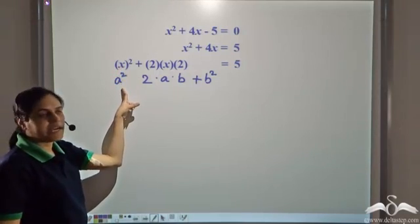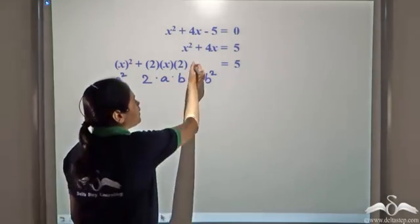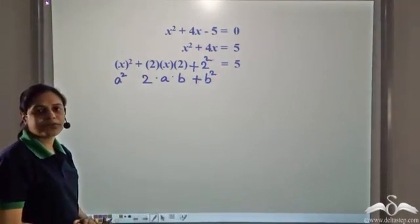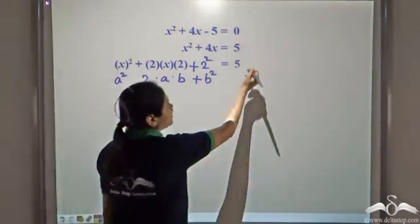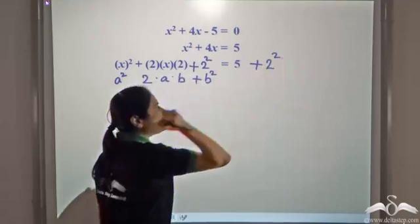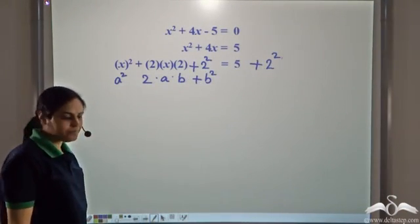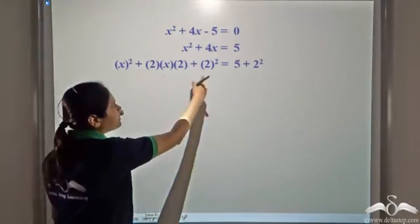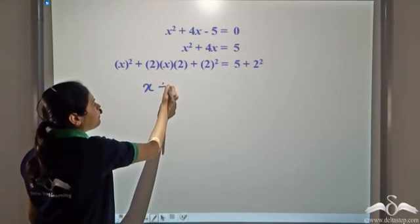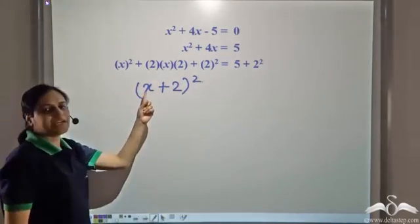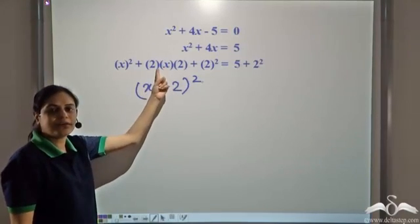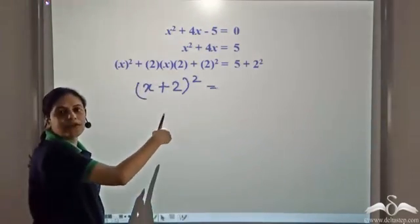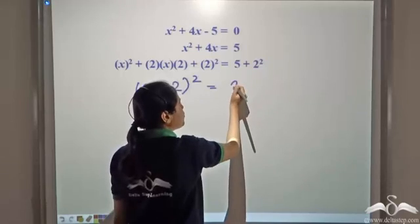We have taken x to be a, so 2 will be b. If we add a 2 squared here, this will become x plus 2 whole square. But if we add 2 squared to the left hand side, in order to maintain equality we need to add 2 squared to the right hand side as well. So we add 2 squared to both sides. The left hand side becomes x plus 2 whole square, and the right hand side is 5 plus 2 squared, which is 5 plus 4 equal to 9.